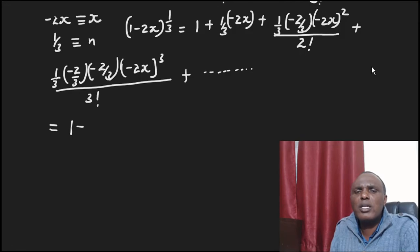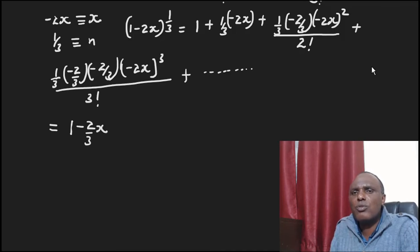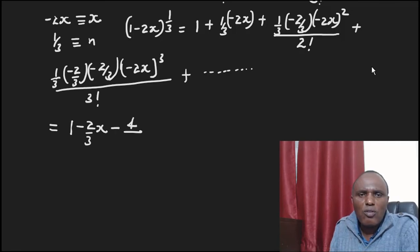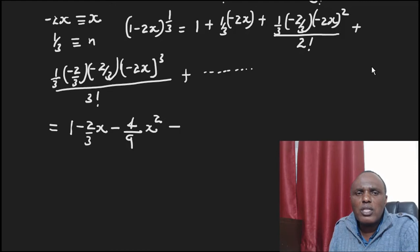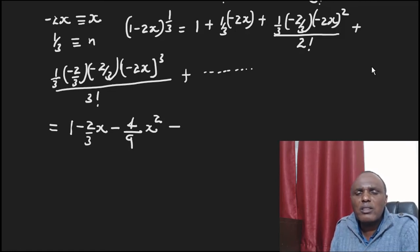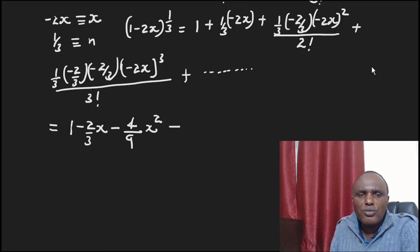Simplifying: the first term is 1. The second term is 1 over 3 multiplied by negative 2x, giving negative 2 over 3 x. The third term: negative 2 over 3 times (negative 2x) squared gives 4 over 9 x squared. For the fourth term, (negative 2x) cubed — negative times negative is positive, positive times negative is negative — so the result is negative.